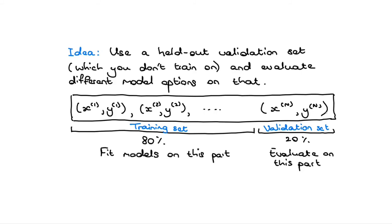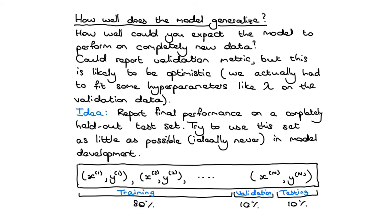The problem is, if you give your client a number based on what you found on the validation set, you're probably going to be a little bit optimistic. Because what you actually did was try a bunch of different lambdas on the validation set — so the validation set number is probably a little optimistic. Your client will be angry if they run this and don't get the performance you told them. The real question from your client is: how well does this model generalize to data never seen before, neither during training nor during the process of picking the regularization parameter or polynomial order?